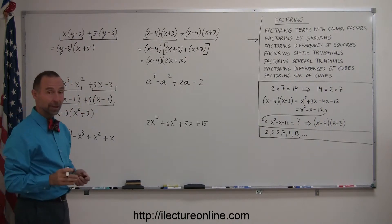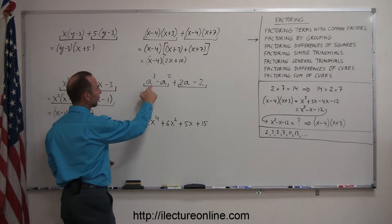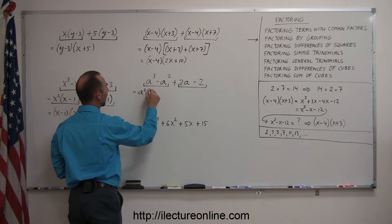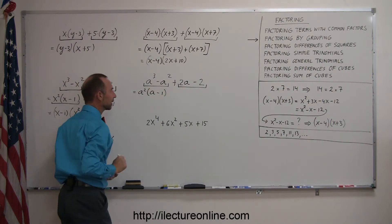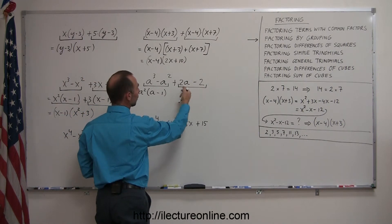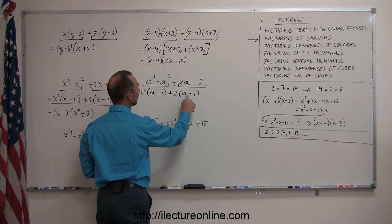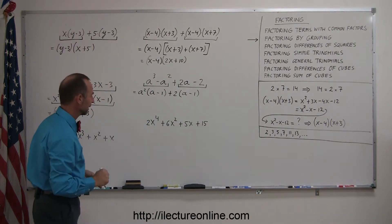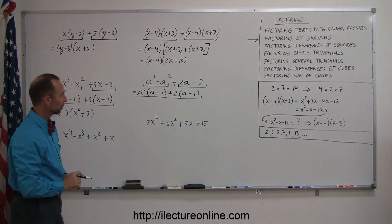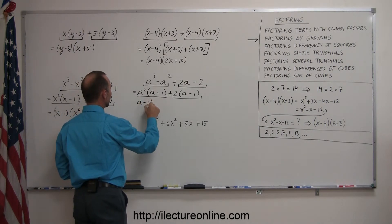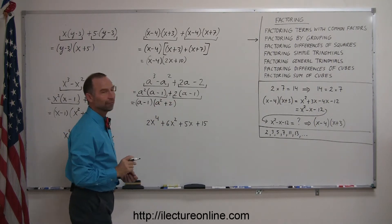Looking at the next problem, I do the same thing — I have four terms. I group the first two together and the last two together, then look for common factors. In the first group, a squared is common, so I write it as a squared times (a minus 1) — a cubed divided by a squared is a, and a squared divided by a squared is 1, don't forget the minus sign. In the next group, the number 2 is common, so I factor out 2 and I'm left with (a minus 1). Quick check: 2 times a is 2a, 2 times minus 1 is minus 2. Then I factor out the common (a minus 1), and I'm left with (a minus 1)(a squared plus 2) — the factored form.